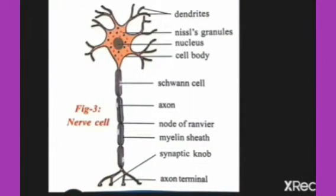The coordination system consists of brain, spinal cord, and nerves arising from the brain and spinal cord. Nerve cells or neurons are the structural and functional units of the nervous system. Let us see the parts of the nerve cell or neuron.